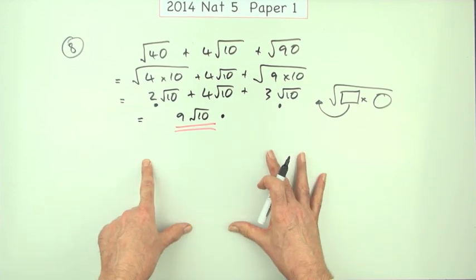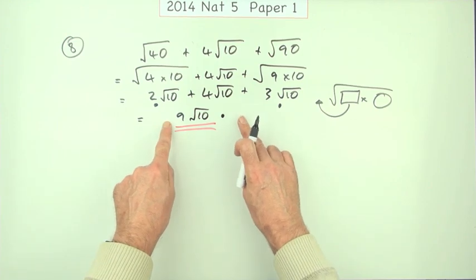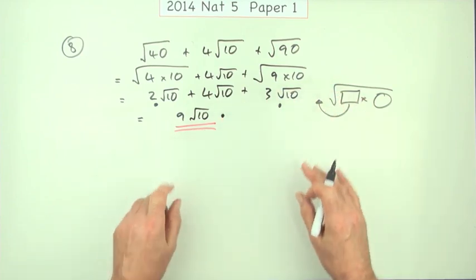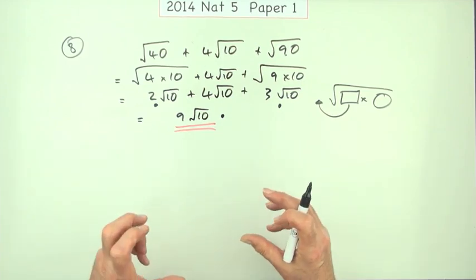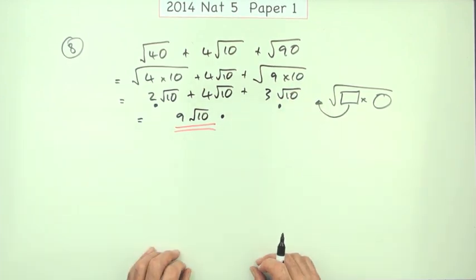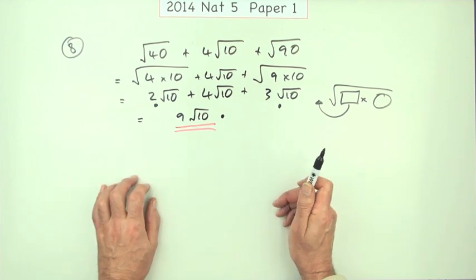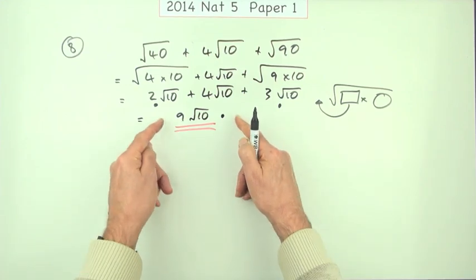Now here's one where it says a correct answer without working would get no marks. There's a warning about being too adventurous on the other ones and just jumping straight to a solution. And it also says something like subsequent incorrect working is usually that thing.